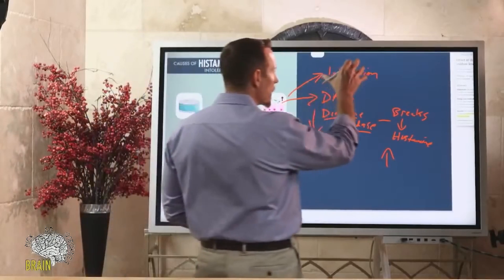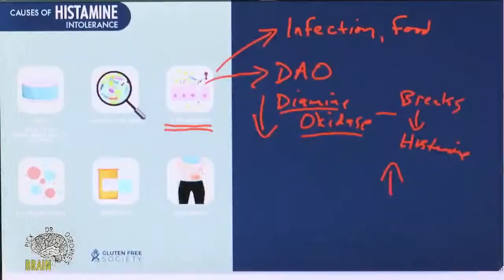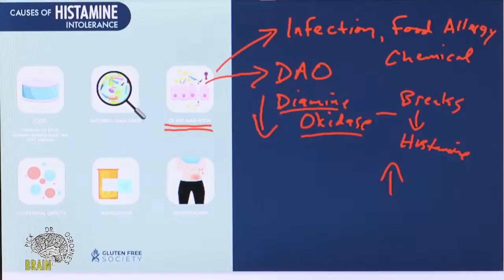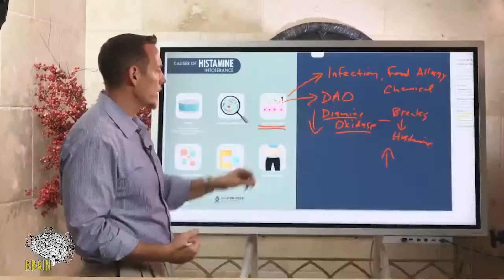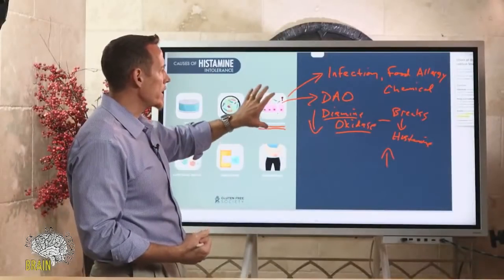Infection can cause this, food allergy or food sensitivity can cause this, and chemical exposures can cause this. Food additives, food dyes, and food preservatives are not foods — they are chemicals that can damage your gut's ability to properly produce diamine oxidase to break down histamine.